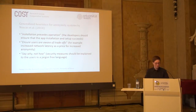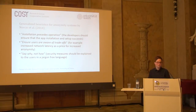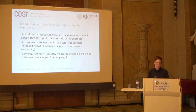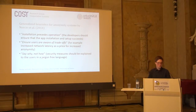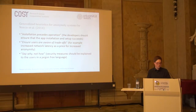What I also found interesting, which I want to mention separately, are generalized heuristics for anonymity systems — this is one kind of outcome that usable security research can produce. For example, it can result in heuristics or guidelines that are generalizable for all security systems: installation precedes operation — if you can't install it, you can't use it; users should be aware of trade-offs — for example, if you increase network latency, you could pay the price of decreased anonymity; and you have to say why, not how — security measures should be explained in understandable language.